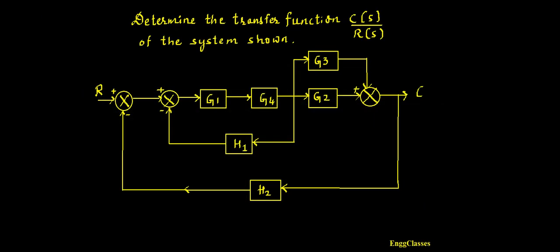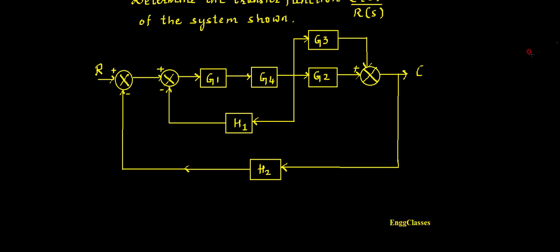Hello everyone, welcome to NG Classes' YouTube channel for a video lecture series in control systems. In this video lecture we shall consider a numerical on block reduction technique and finally get the transfer function C(s) divided by R(s). The block diagram looks something like this — so how do we start?